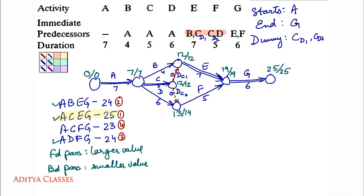Last path is A, C, F, G. Forward pass: 0 plus 7 is 7; 7 plus 5 is 12; 12 plus 0 is 12 — but in forward pass we pick the larger value, so we use 13; 13 plus 5 is 18, and we continue with 19; 19 plus 6 is 25. Backward pass: 25 minus 6 is 19; 19 minus 5 is 14; 14 minus 0 is 14 — but we continue with the existing 12; 12 minus 5 is 7. All paths have been taken care of.